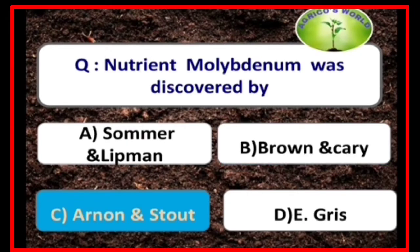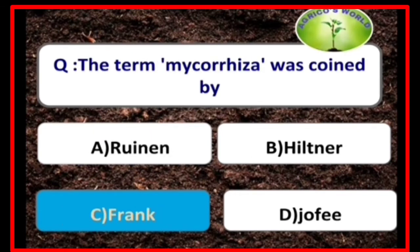Nutrient molybdenum was discovered by Arnon and Stout. The term mycorrhiza was coined by the scientist Frank.